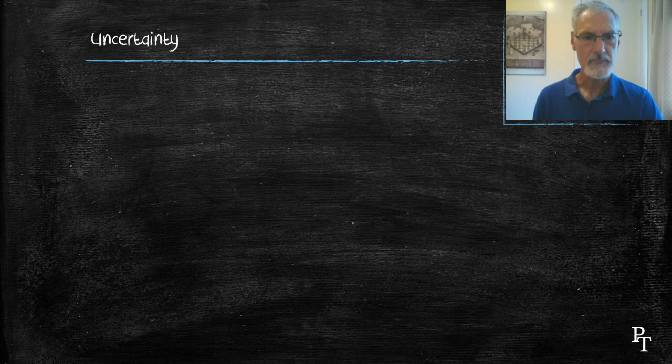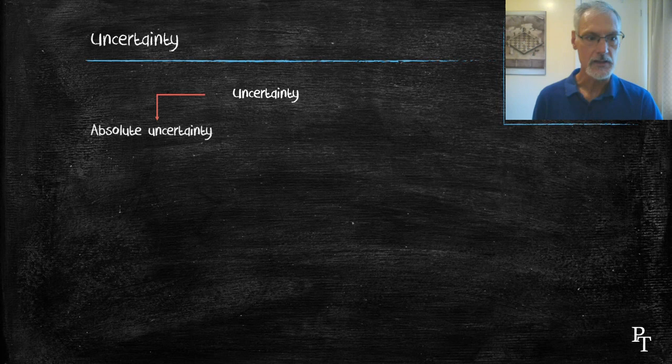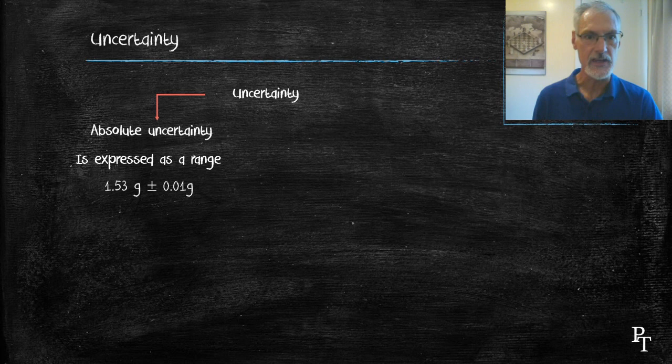Let's take a look at that uncertainty a little bit more. Uncertainty can be expressed a couple of ways. One method is what we call the absolute uncertainty, where we list a value, the mean value, and the range of that value by saying what its plus or minus happens to be.